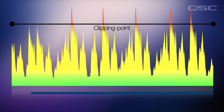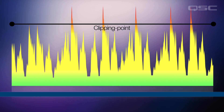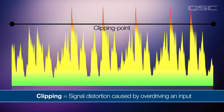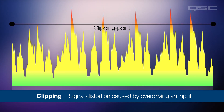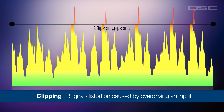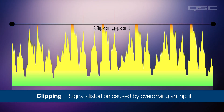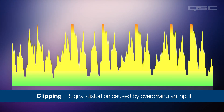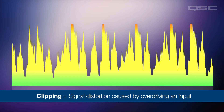When setting gain, one of the issues we want to avoid is clipping. Clipping occurs when a signal overloads the downstream electronics in the system. It's called clipping because the tops of the waveforms are literally clipped off when a signal peak exceeds the capacity of the gain stage, which leads to distortion in the signal. You might like this from a vintage tube guitar amp, but not so much from a mixer.